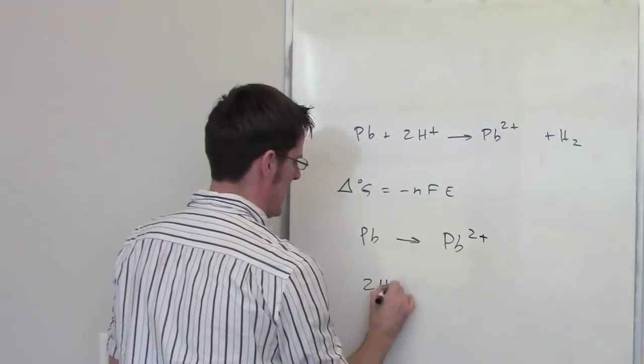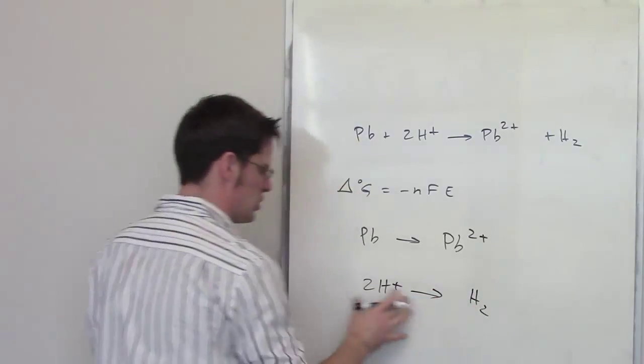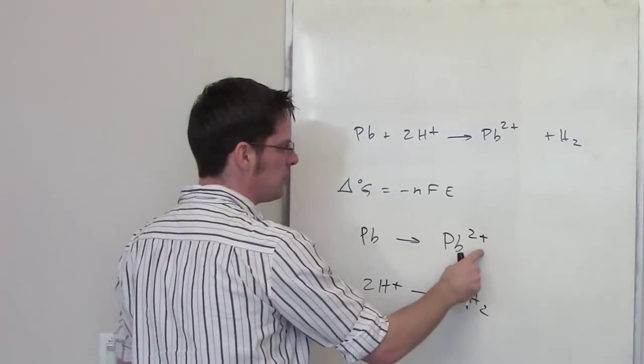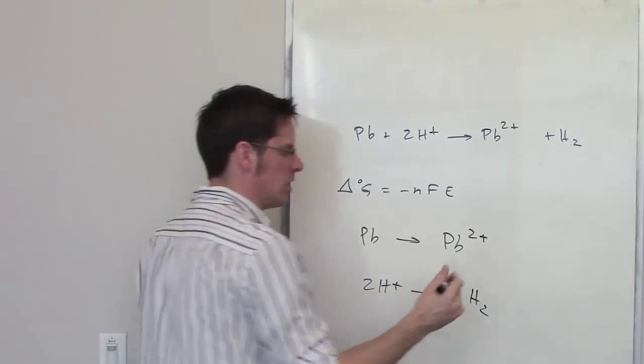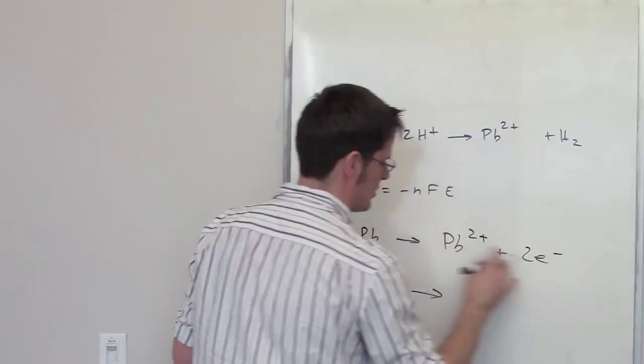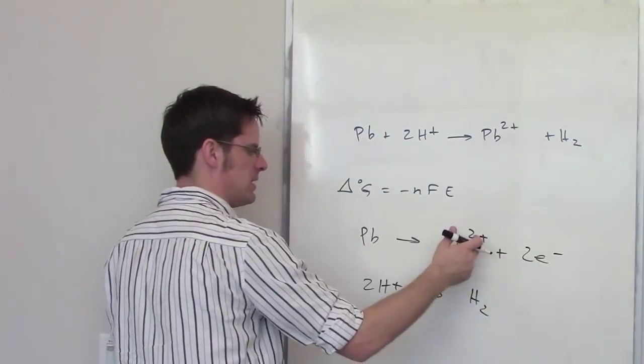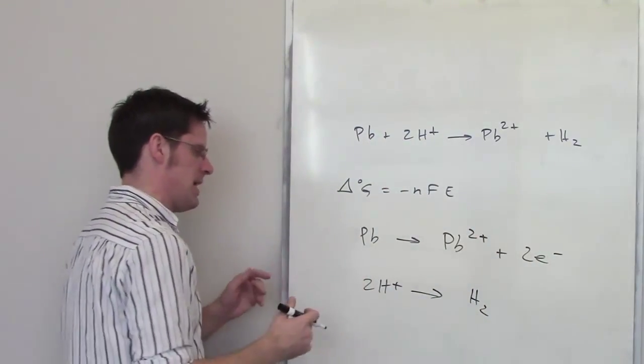I've got two H+ being converted into H2. I've got a 2+ charge here on the right side. I've got a zero charge on the left. In order to make that work, I've got to add two electrons here to the right side. So, negative 2 plus a positive 2 equals zero on the right. That charge balances out.